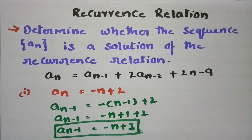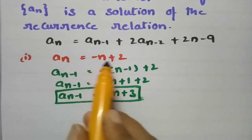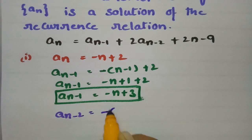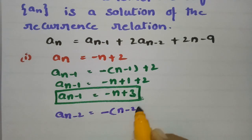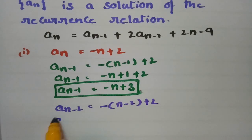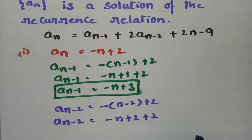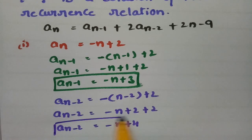Again we need the An-2 value. Since An = -n + 2, substituting n-2 in place of n gives An-2 = -(n-2) + 2 = -n + 2 + 2, so An-2 = -n + 4.